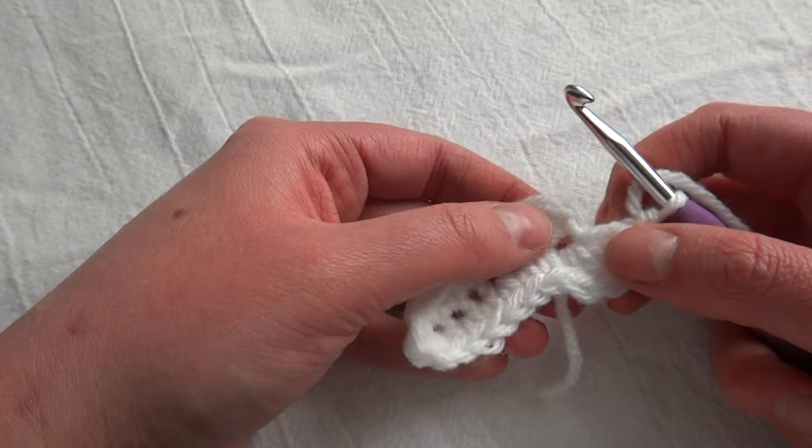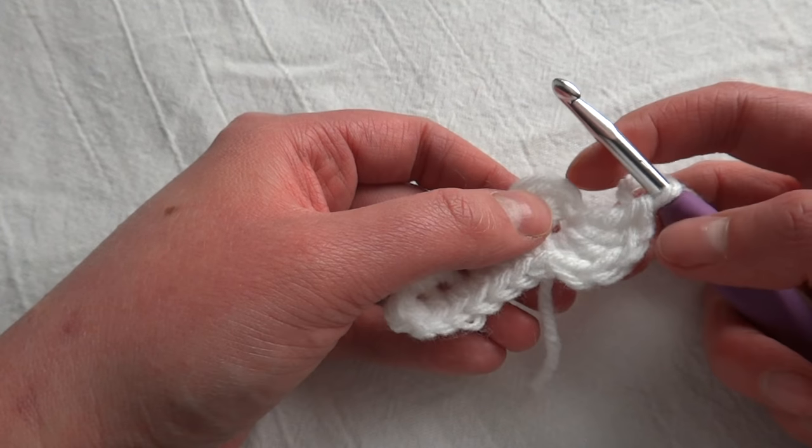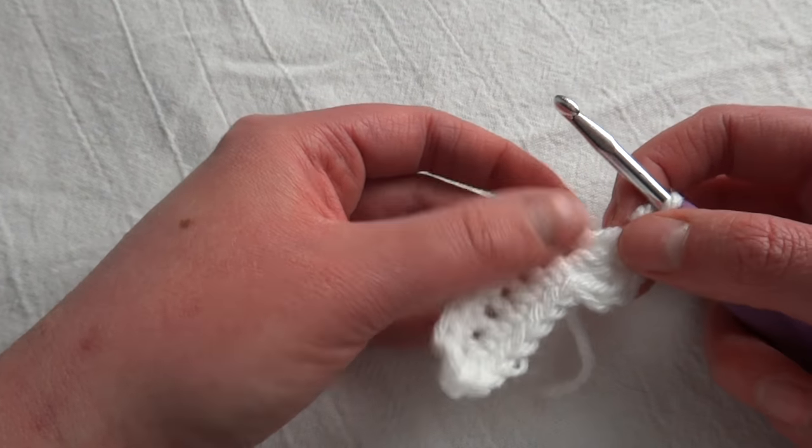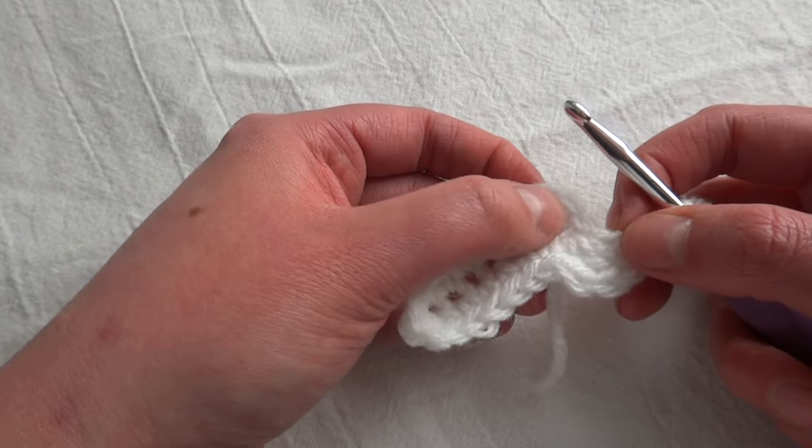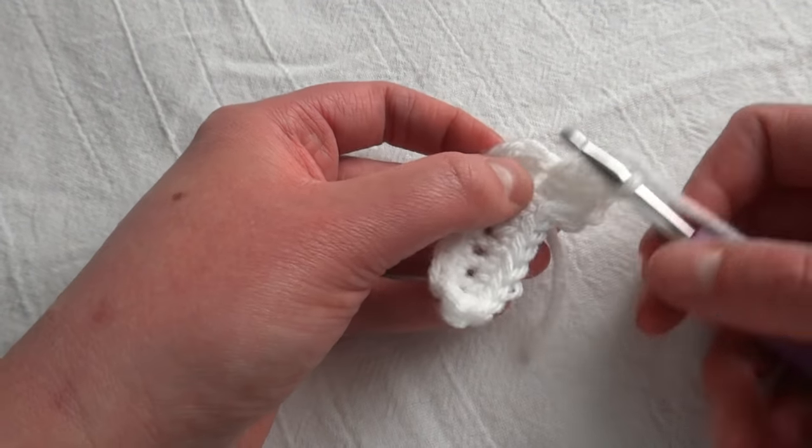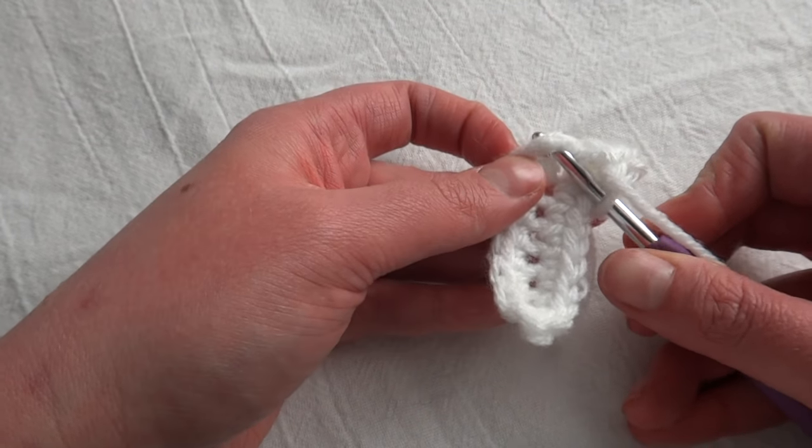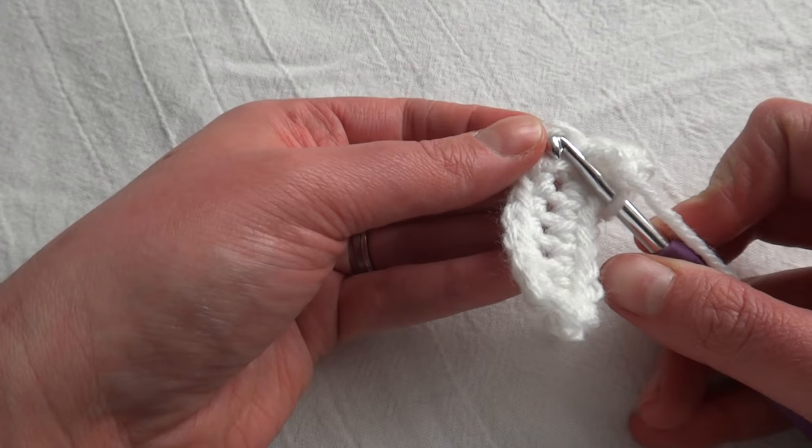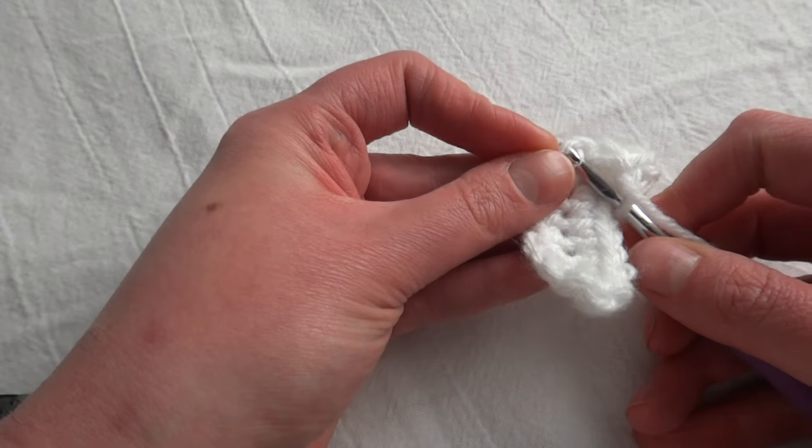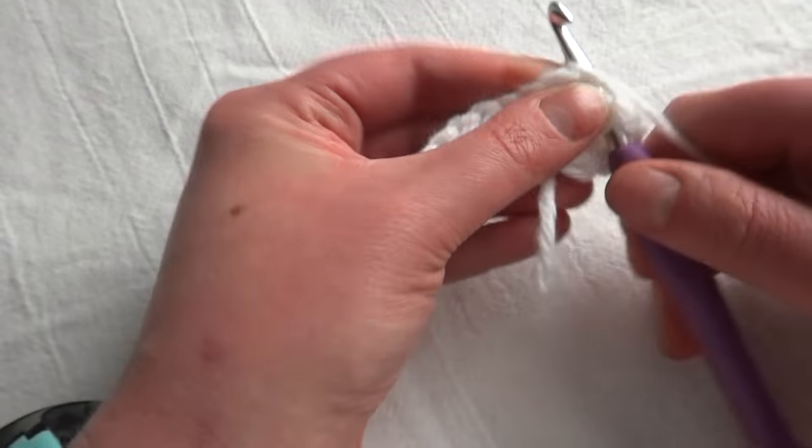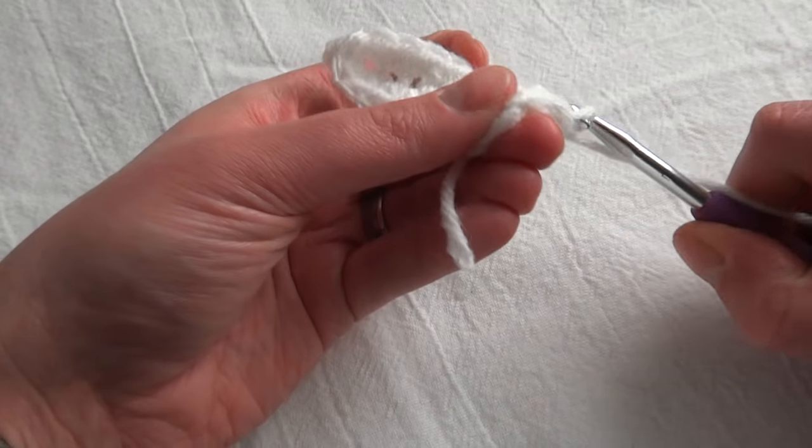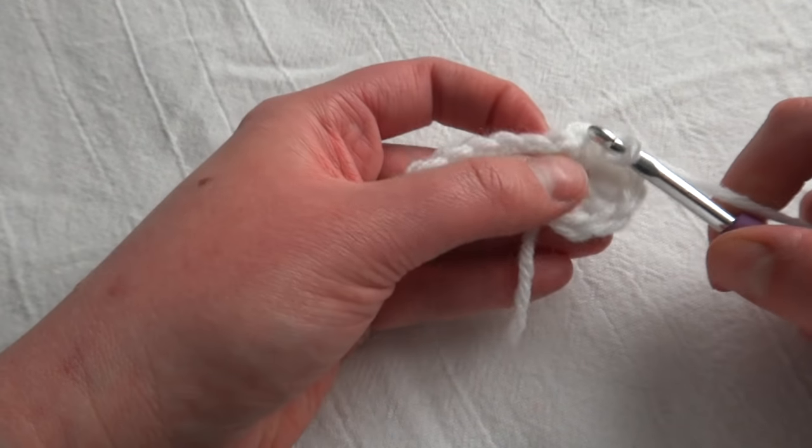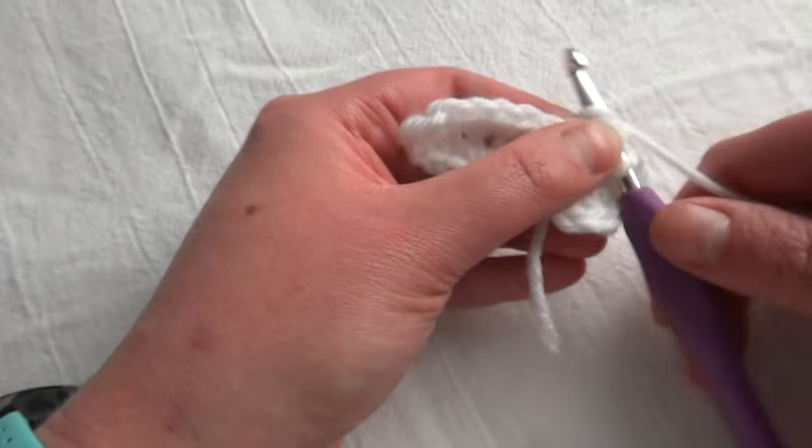So the next thing you're going to do is join to the top of that first chain two where we skip those two stitches. So one, two, and we're going to slip stitch in the top of that double crochet.